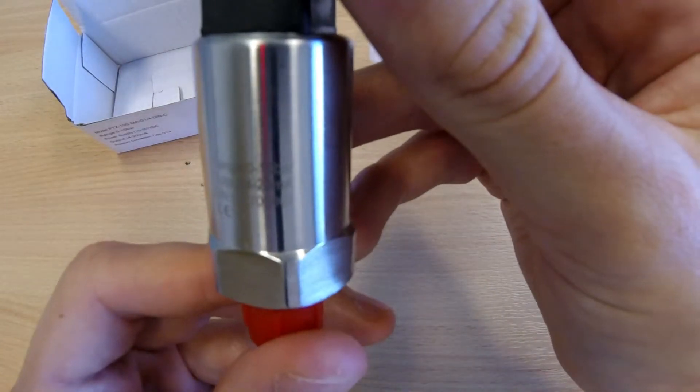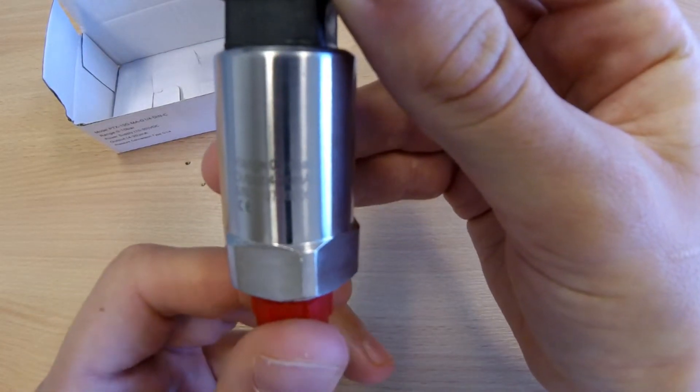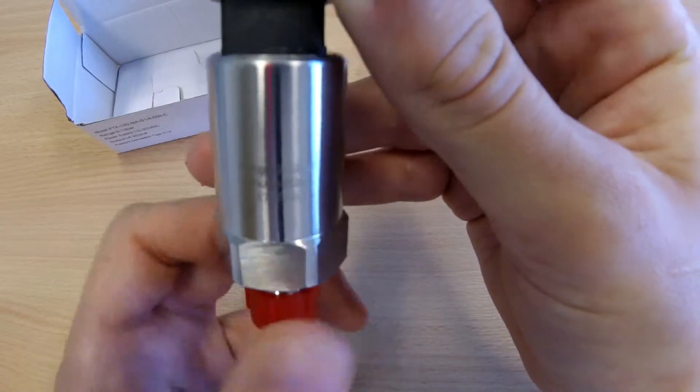This pressure transmitter is a 0-10 bar with 4-20mA output.